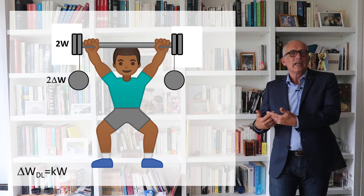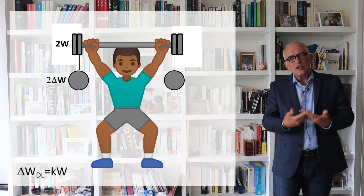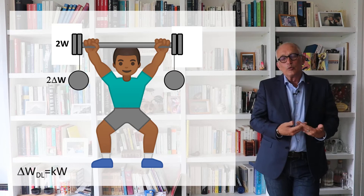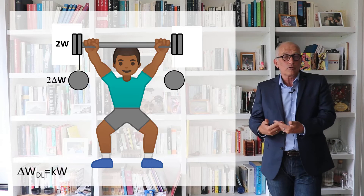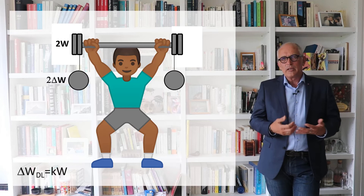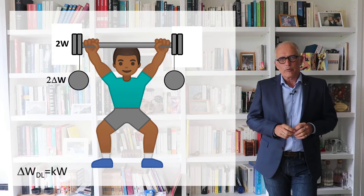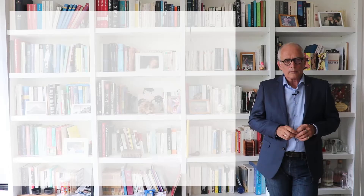The additional weight you have to add to make a difference is proportional to the original weight. So ΔW_DL, the limit value of ΔW, is equal to a constant K — which depends on the type of stimulus and is different for sound versus weight — multiplied by the reference weight.